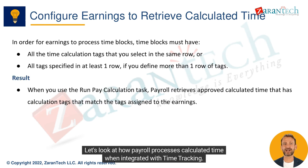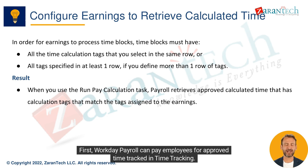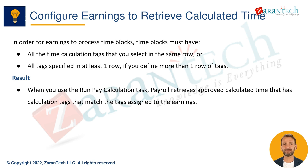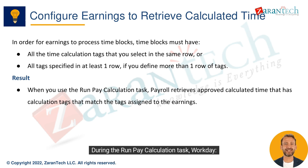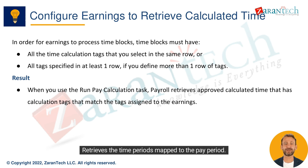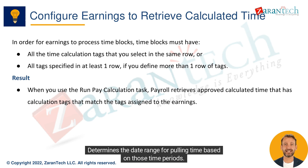Let's look at how payroll processes calculated time when integrated with time tracking. Workday payroll can pay employees for approved time tracked in time tracking. To link the applications, you must map earnings to time calculation tags and link time periods to pay periods. During the run pay calculation task, Workday retrieves the time periods mapped to the pay period and determines the date range for pulling time based on those time periods.